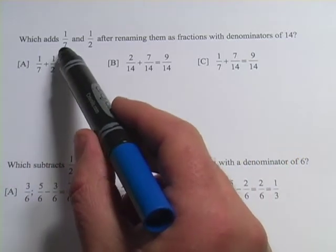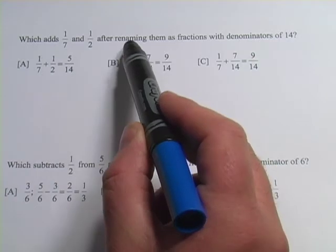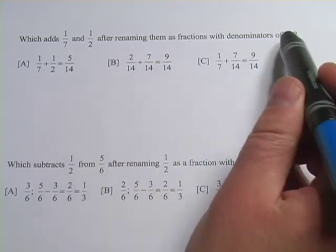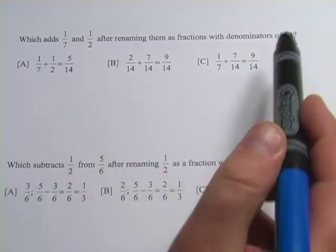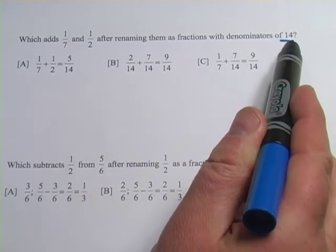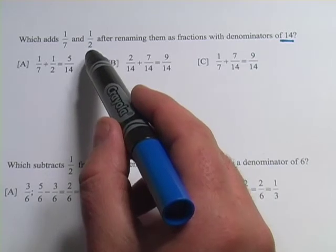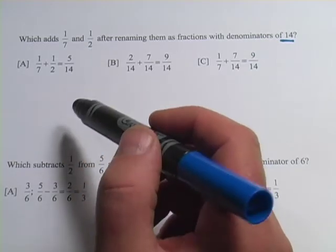Let's look at this. It says, which adds 1/7 and 1/2 after renaming them as fractions with denominators of 14? So what that means is we're going to convert 1/7 so that it has a denominator, a number on the bottom of 14, and 1/2 so that it has a number on the bottom of 14.